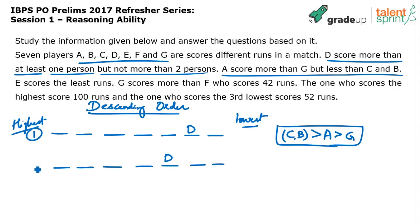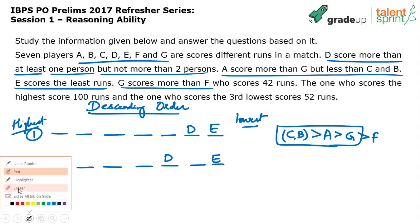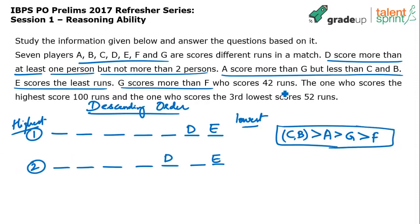We have two cases. E scored the least runs, so E comes in the last position clearly. G scored more than F. F scored 42 runs — when you see 'who scored 42,' we refer to the preceding person, which is F. So F scored 42 and G has scored more than F.